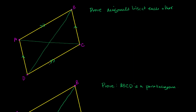We have a parallelogram right over here. What I want to prove is that its diagonals bisect each other. The first thing we can think about is that these aren't just diagonals — these are lines that are intersecting parallel lines. So you can also view them as transversals.